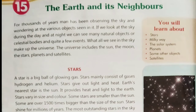The universe includes the sun, the moon, the stars, planets and satellites. A star is a big ball of glowing gas. Stars mainly consist of gases hydrogen and helium. Stars give out light and heat.